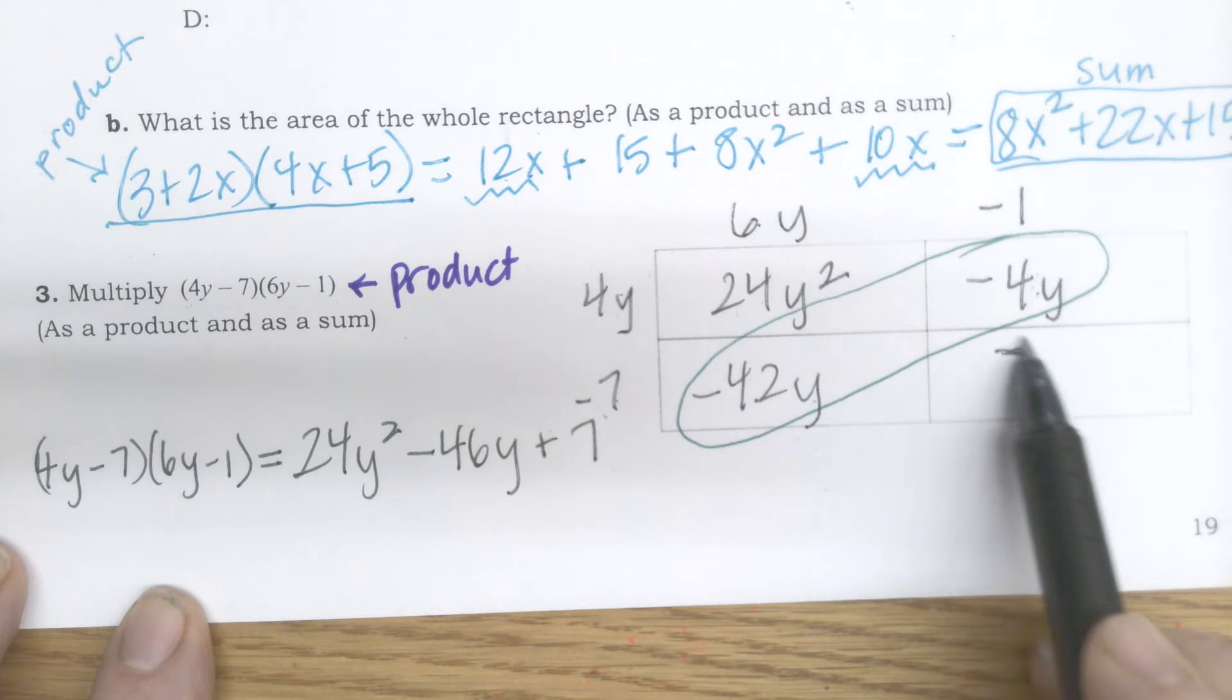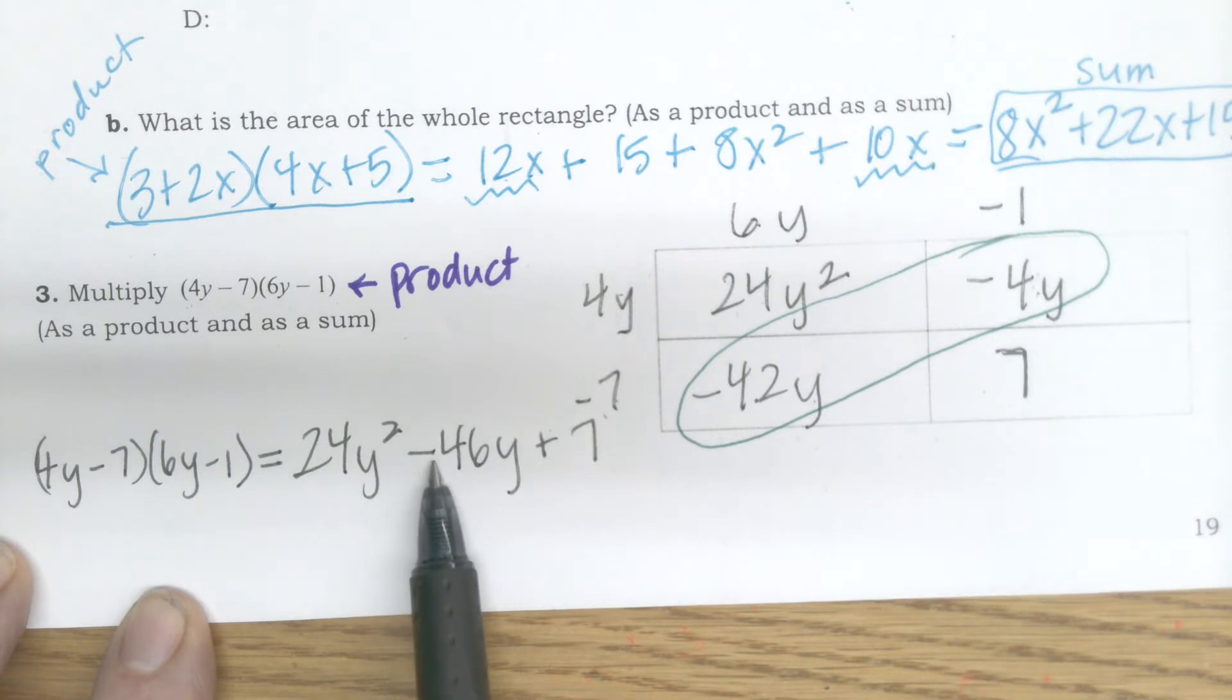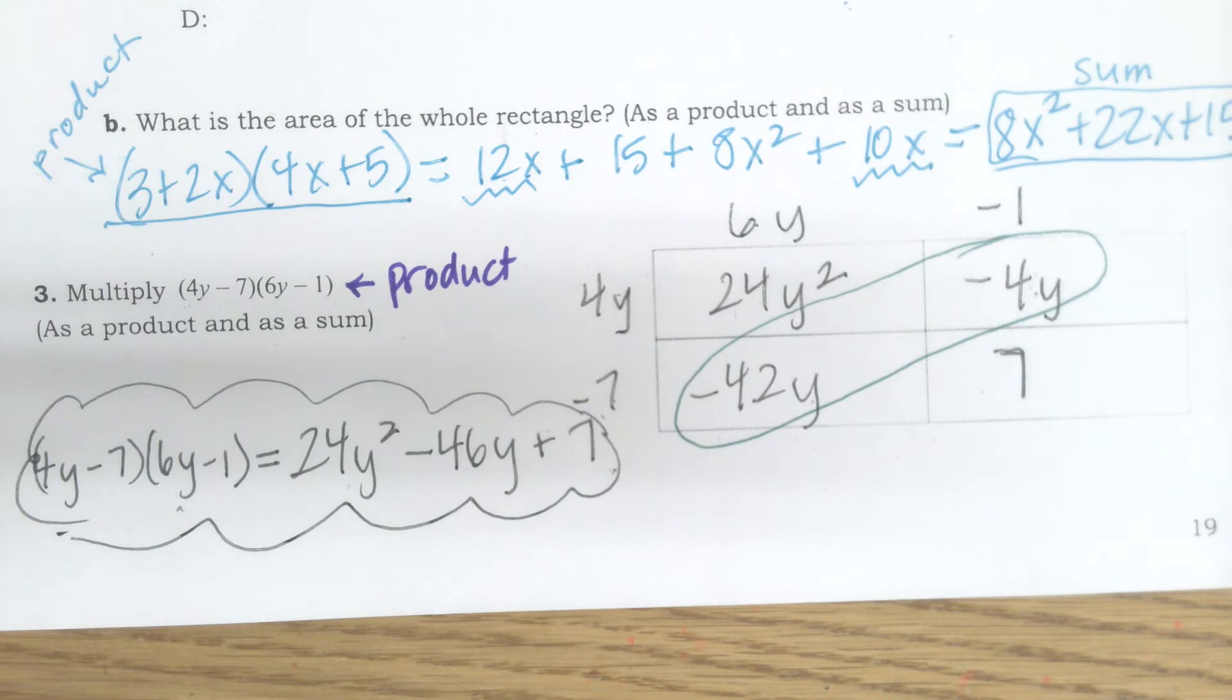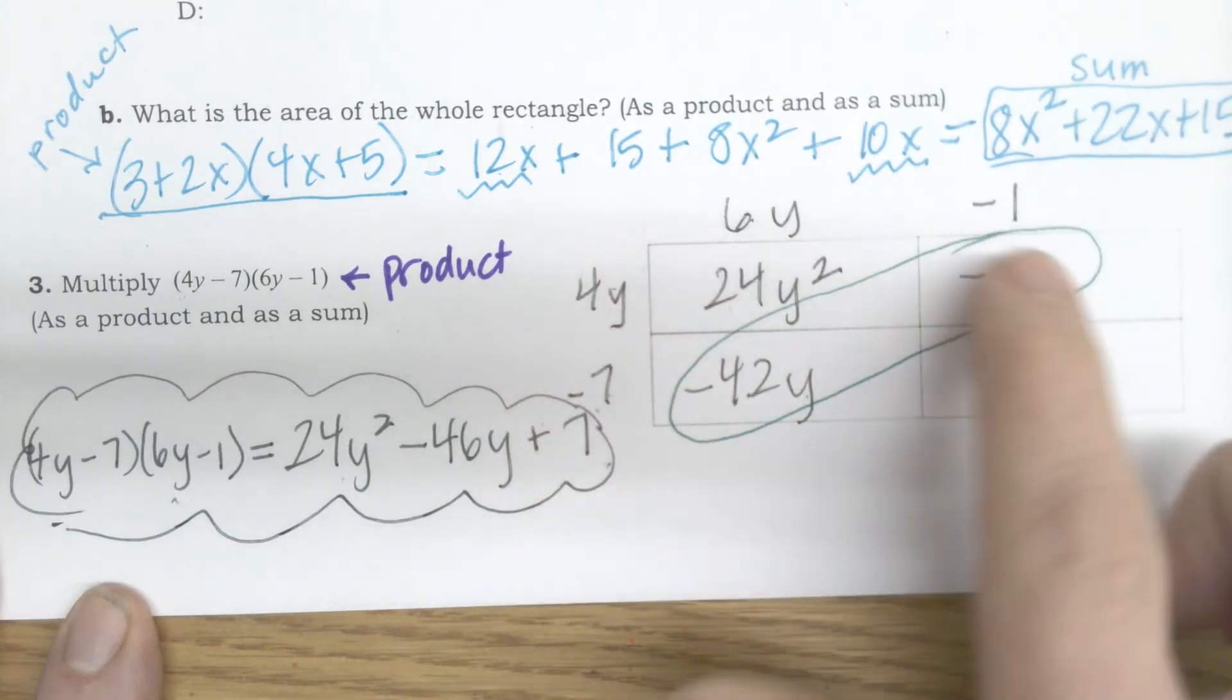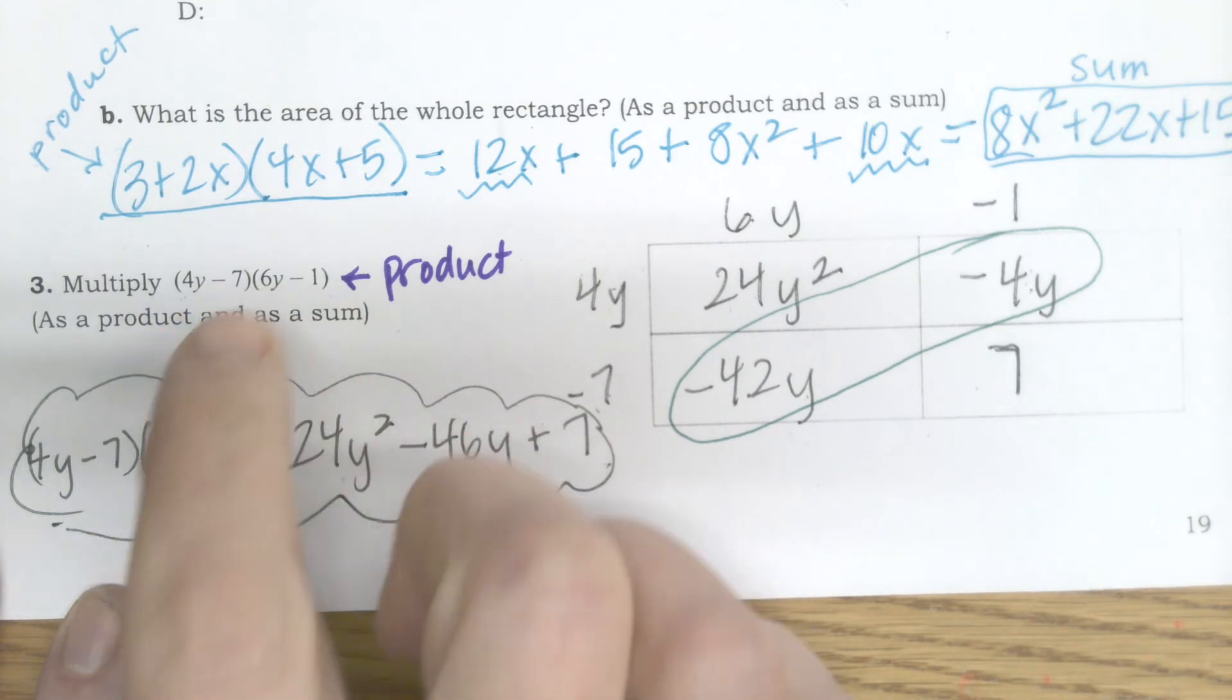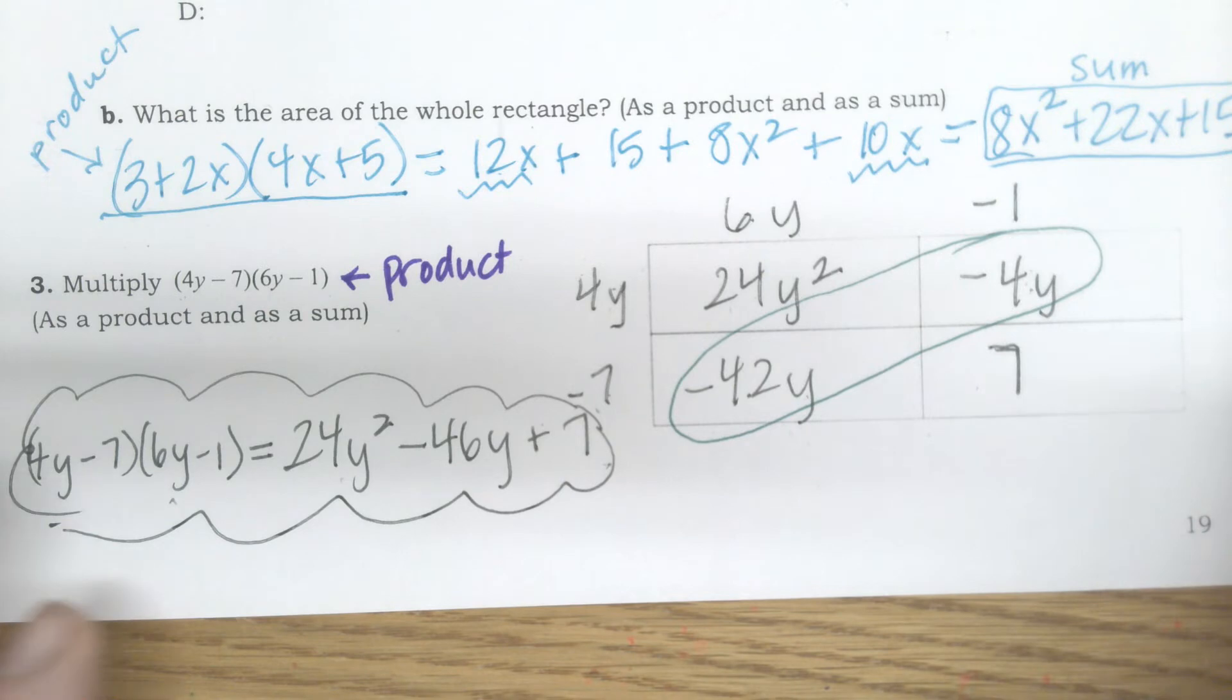A lot of times people are like, I don't know what sign to put. If it's positive, you put a plus. If it's negative, you put a minus. So this was a negative 46 and a positive 7. This would be my final answer, product and sum. The box method is just a way of arranging our polynomials, in this case binomials, two numbers in each term. It's a way of arranging our terms so that we can multiply them in a very organized manner.